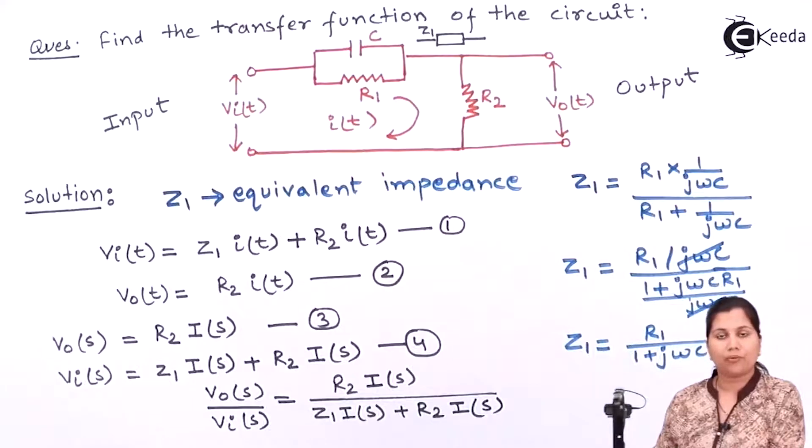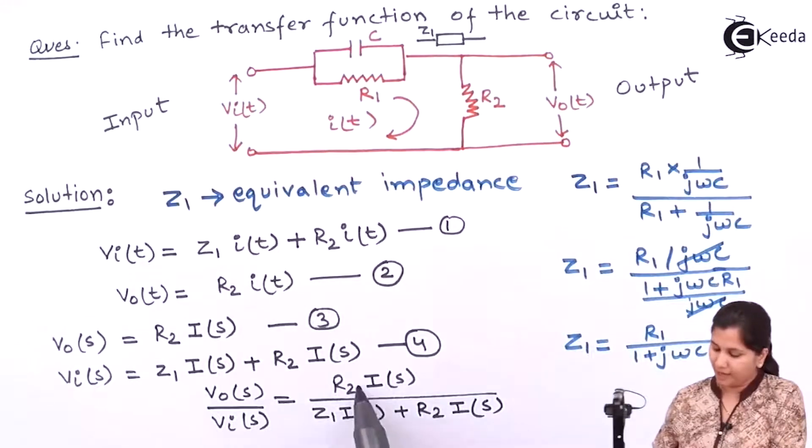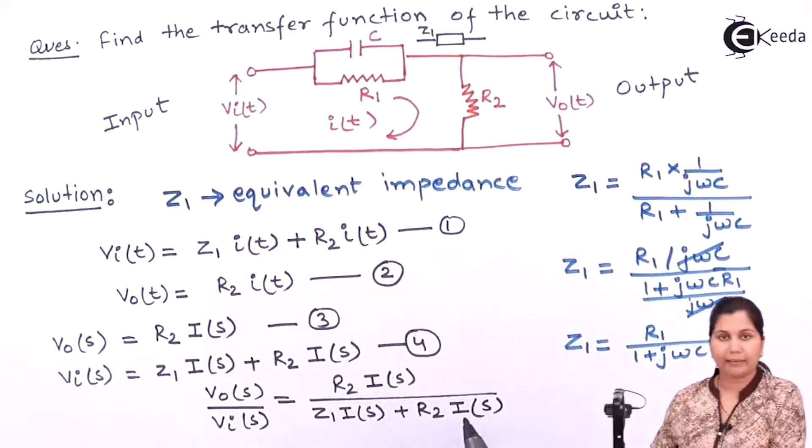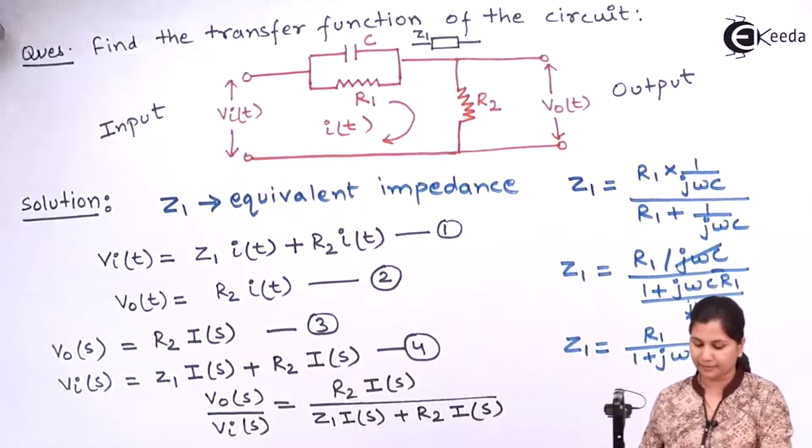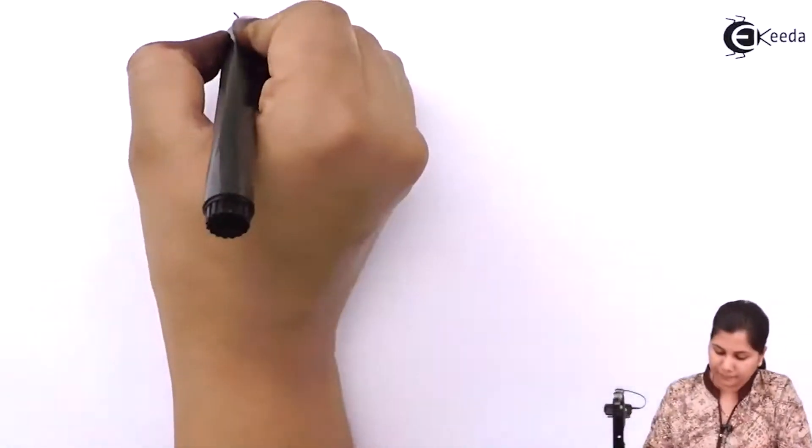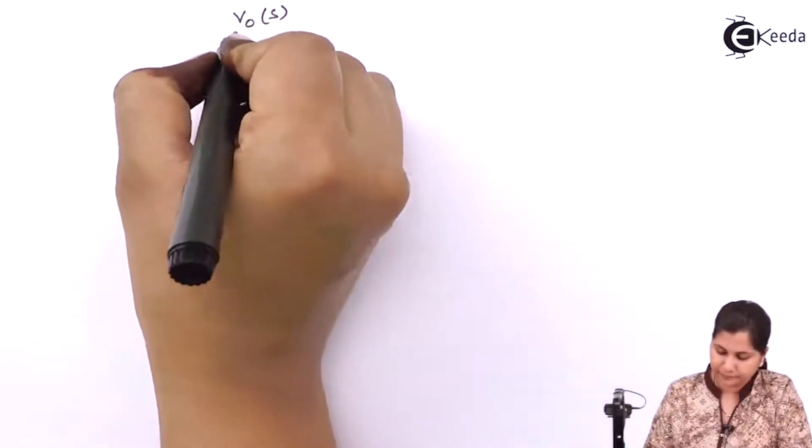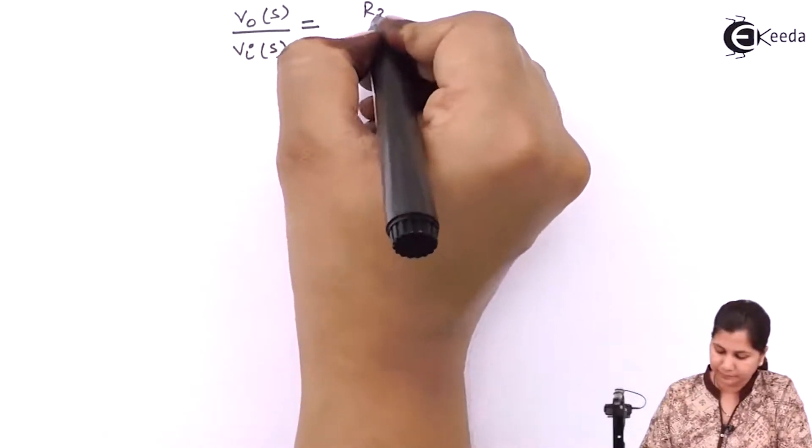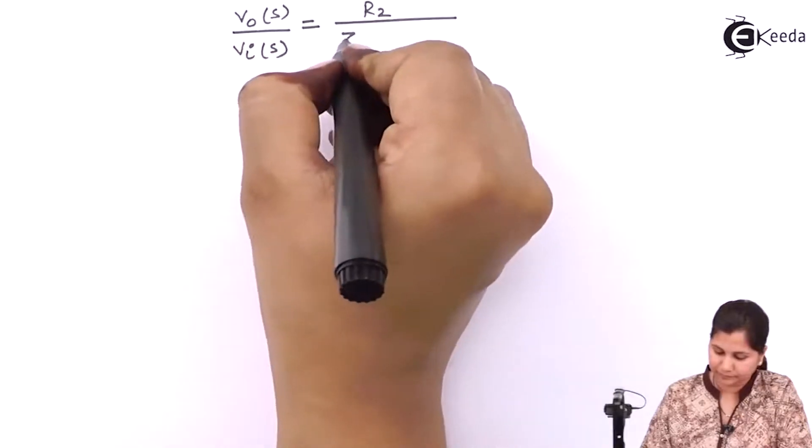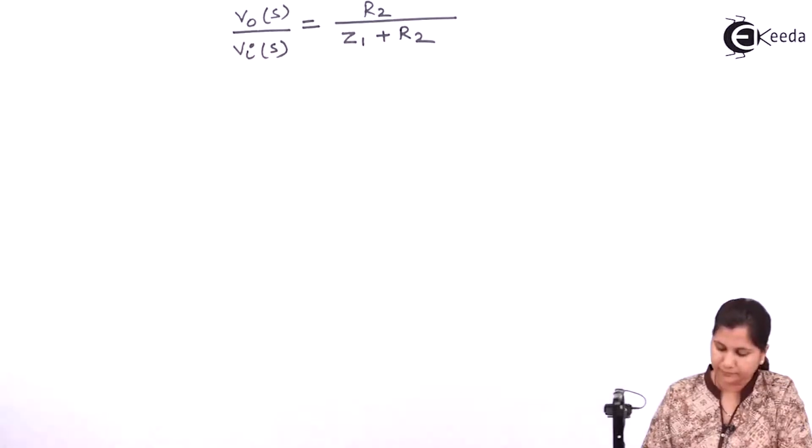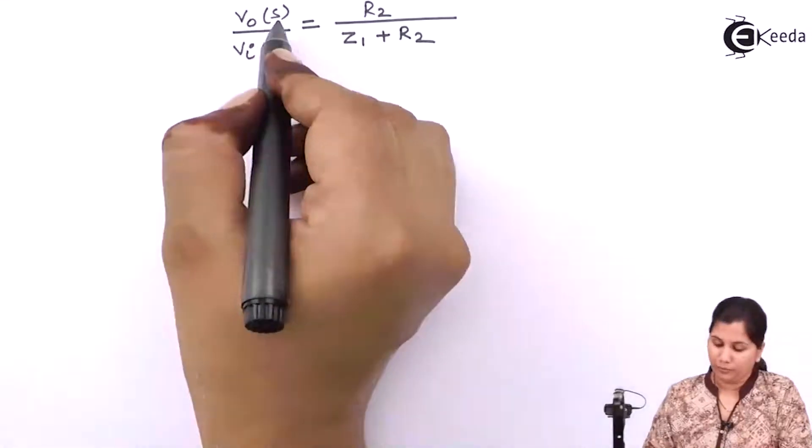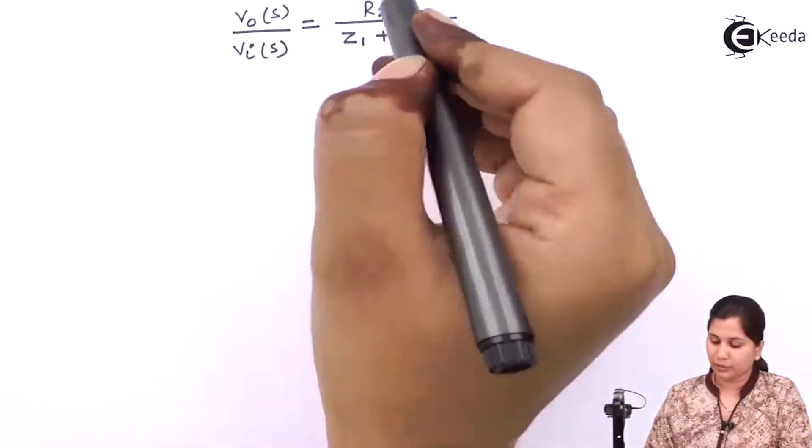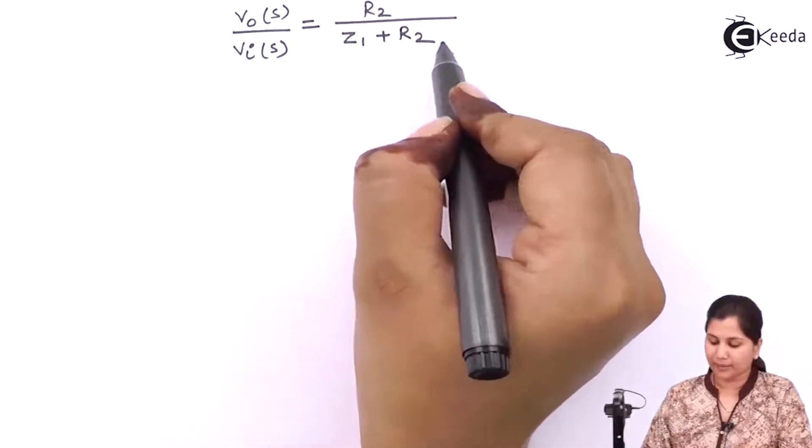Putting the values of V0(s) and Vi(s) we will get R2 I(s) by Z1 I(s) plus R2 I(s). I(s) can be taken out and it can be cancelled. So we will get V0(s) and Vi(s) is equal to R2 by Z1 plus R2.